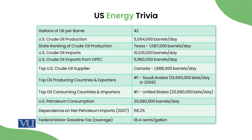What is interesting is if you look at some energy trivia — the most important things about energy. If we look at the barrel of oil: one barrel of 42 gallons of oil comes from crude oil.